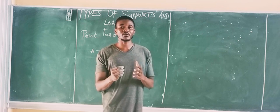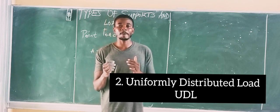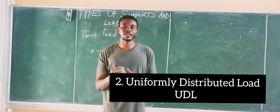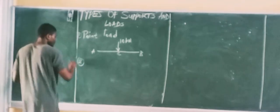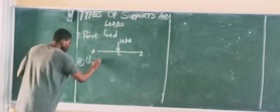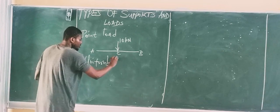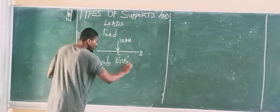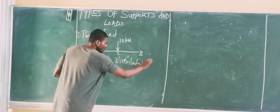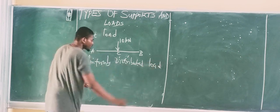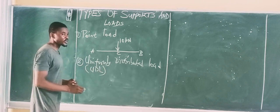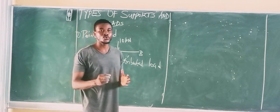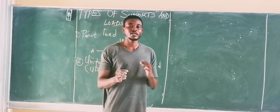The next type of load is called the Uniformly Distributed Load. The short form is UDL. The UDL can be represented in different forms on a beam.